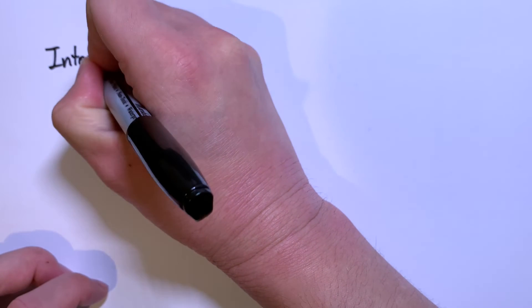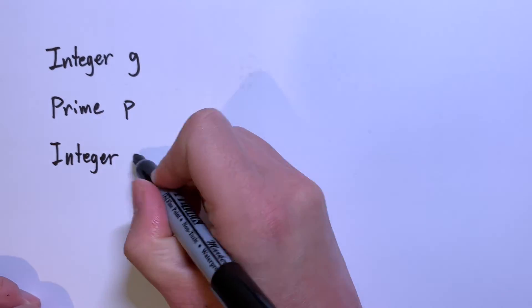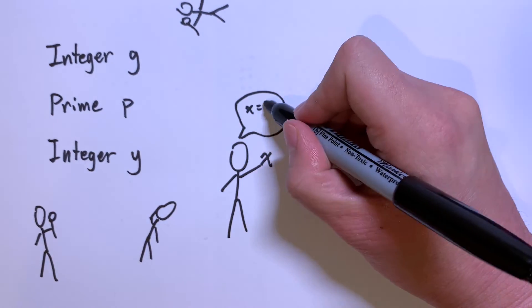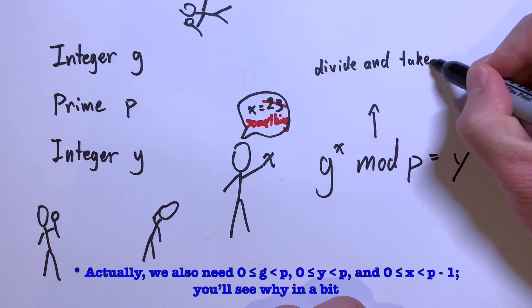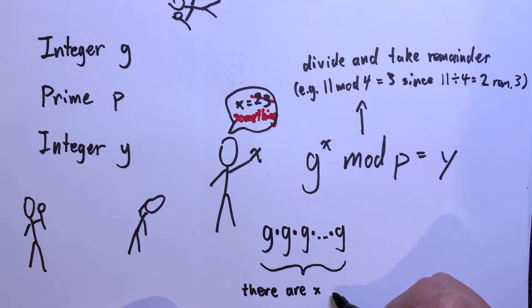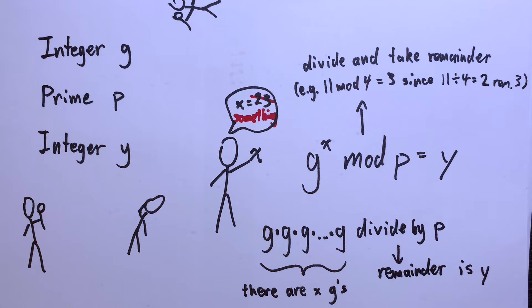You have an integer g, a large prime p, and an integer y. Everyone knows these three numbers. You want to prove that you know a value x such that g to the x mod p equals y, without revealing x. That is, if you multiply g with itself x times, then divide that by p and take the remainder, you get y.